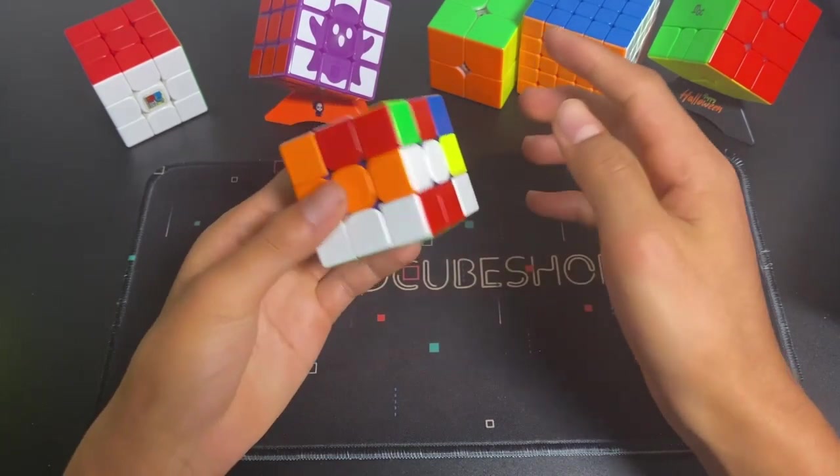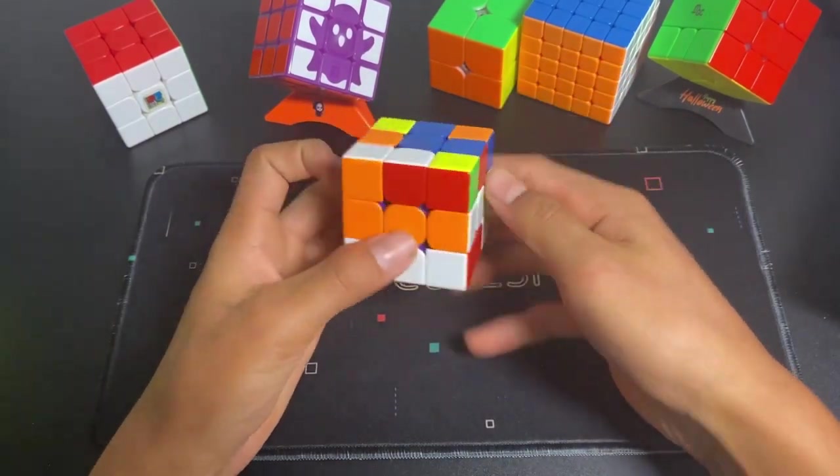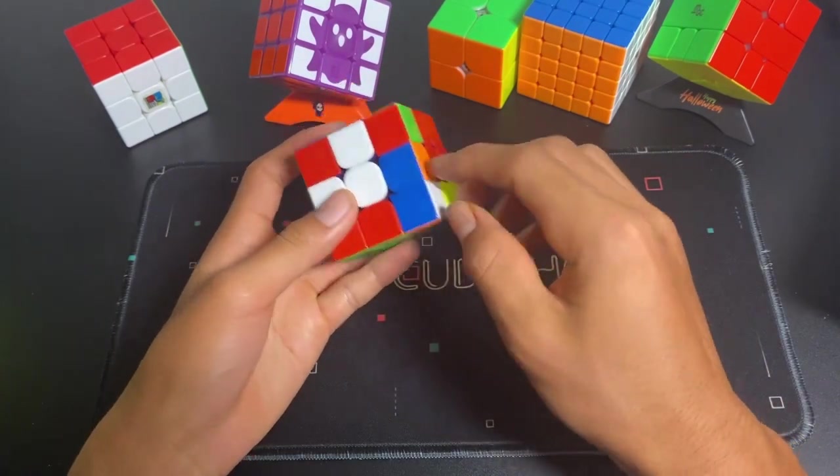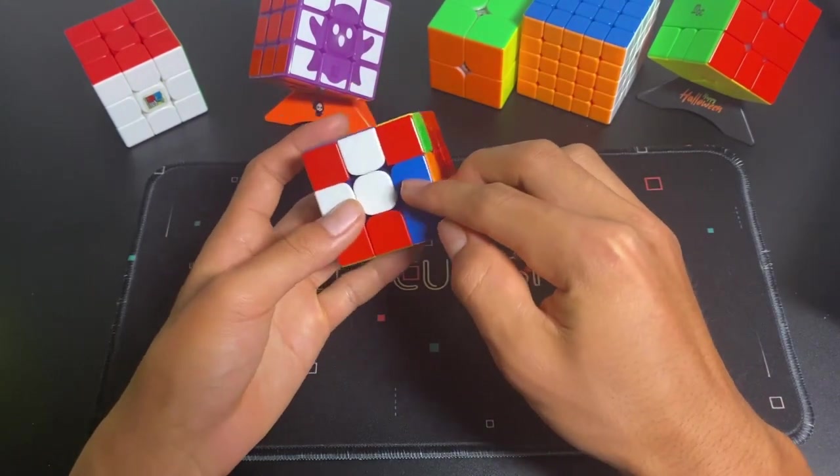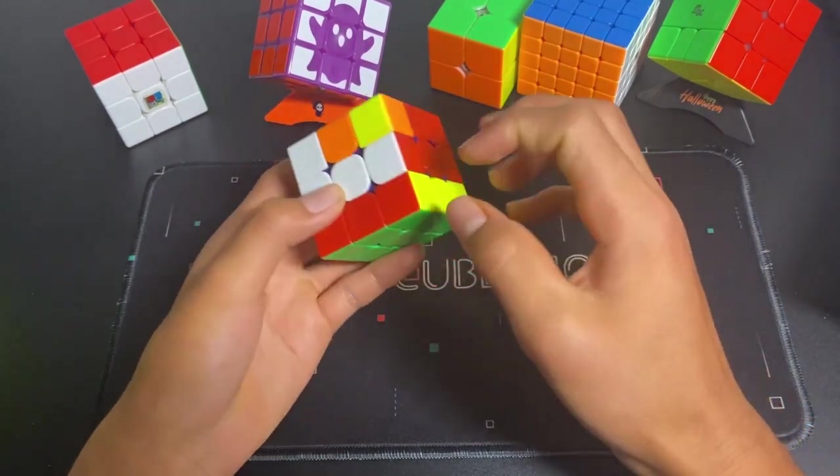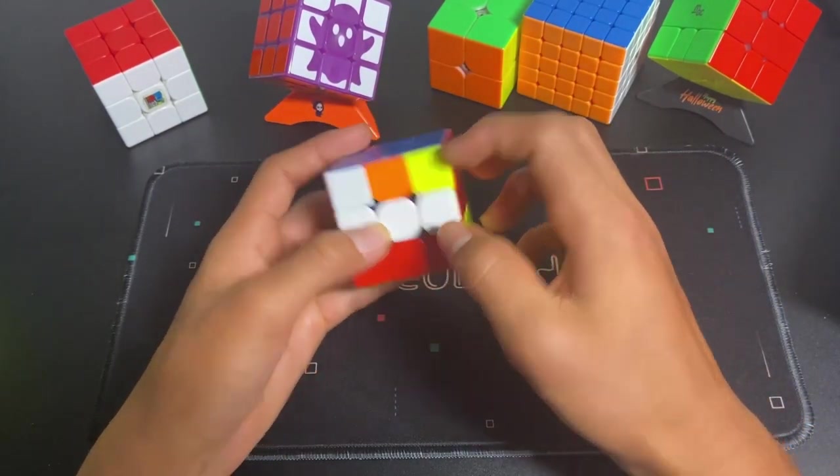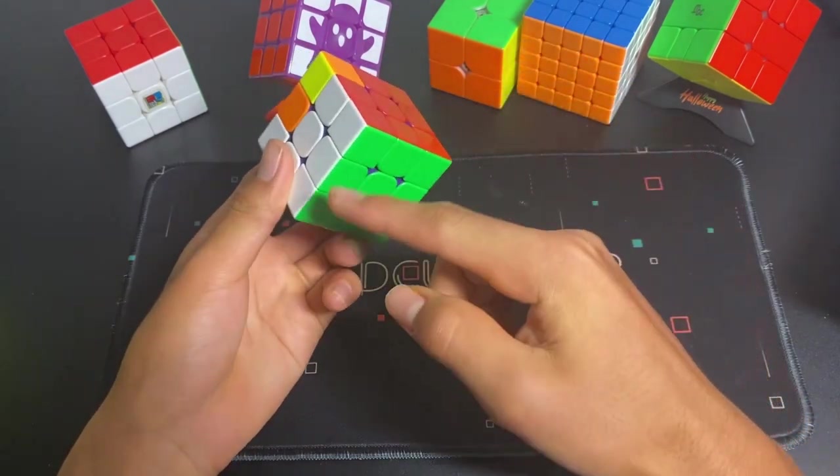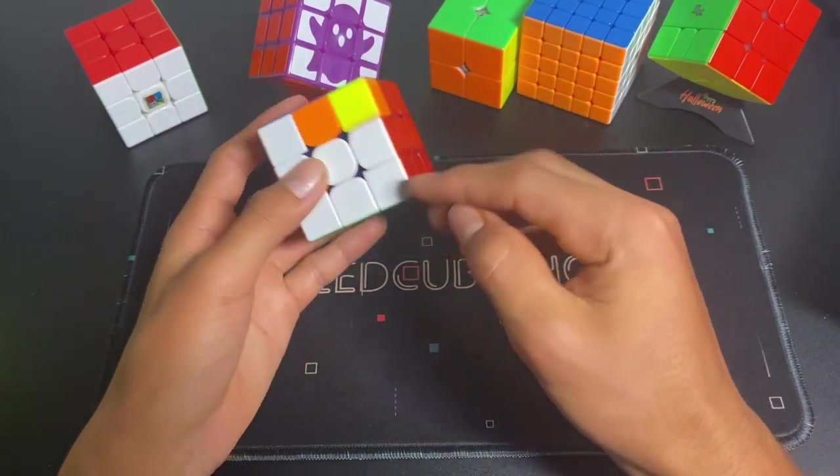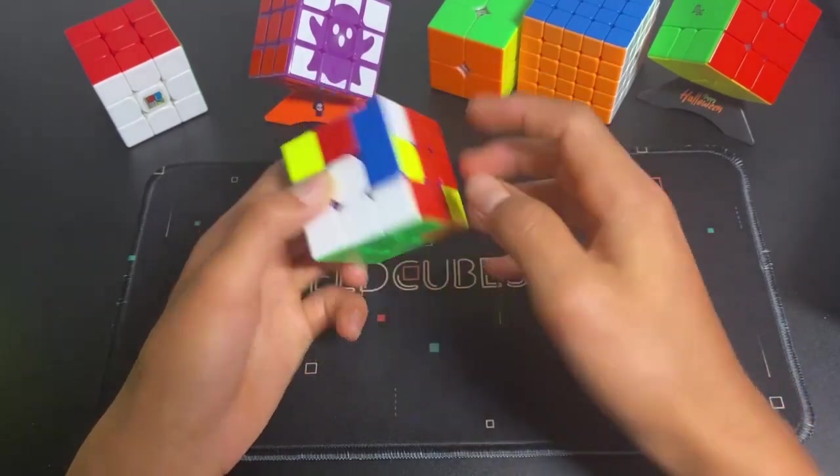simply do this just by doing a D-move to misalign it so that this can basically become one pair. And this one pair, you can solve the missing edge and corner. And then realign the bottom layer. And then that's how you can use multi-slotting in your solves.